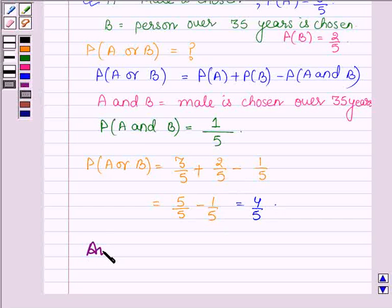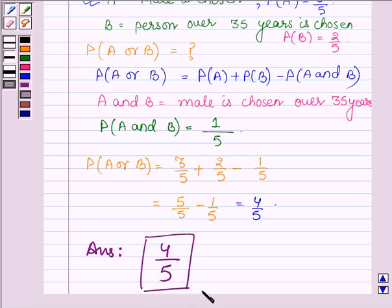Hence, our answer is the probability that a spokesperson will be either a male or over 35 years is 4 upon 5. So this completes the presentation. Hope you have enjoyed it. Take care and bye for now.